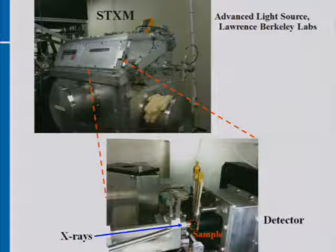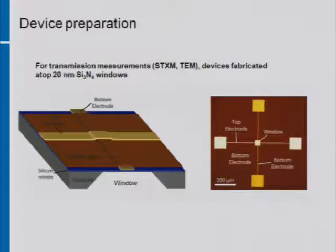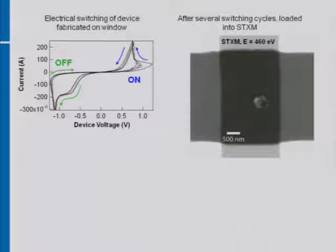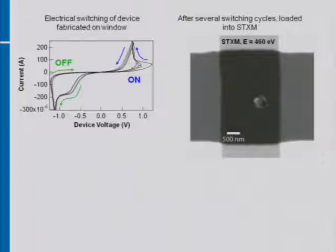To make devices for transmission measurements — both x-ray absorption and TEM — I fabricated them on silicon nitride windows to minimize substrate absorption. The device has a patterned bottom electrode, blanket oxide layer, and patterned top electrode. In top view, the top and bottom electrodes intersect along the silicon nitride window — that's where we look. I fabricated such a device, observed very nice on-off switching similar to what Stan has shown, then loaded it into the STXM. Here is an actual x-ray absorption image of the device, showing the bottom electrode, top electrode, and junction region with visible contrast within the junction.